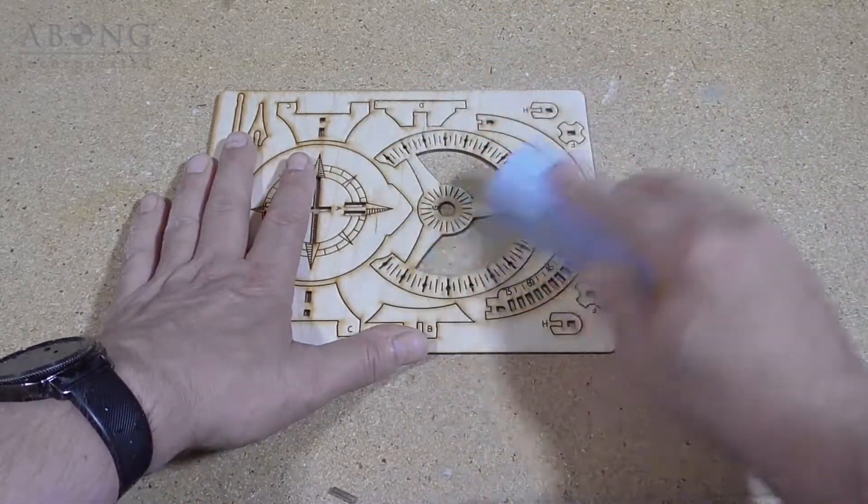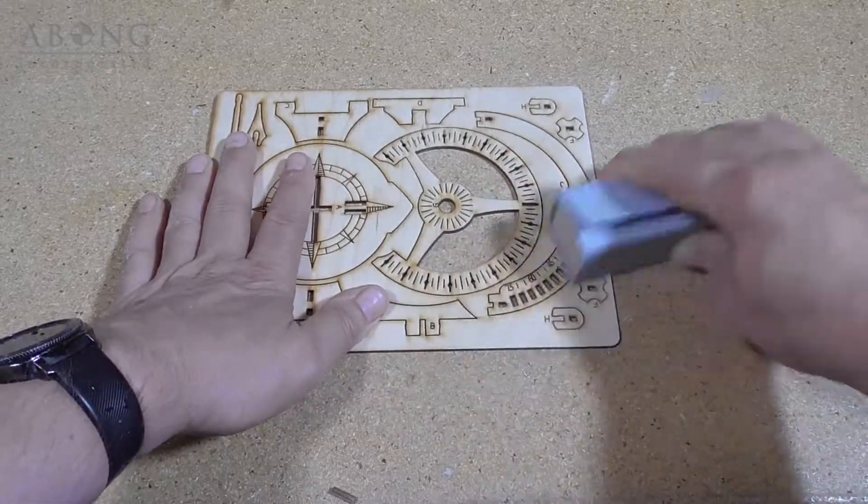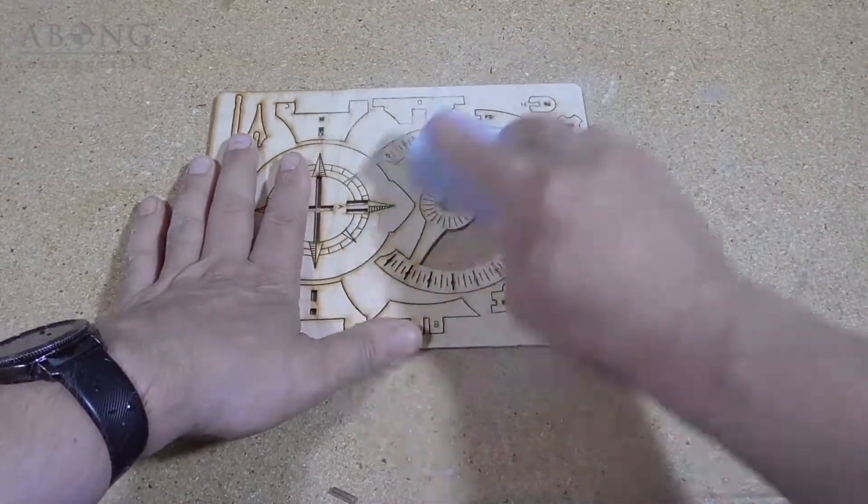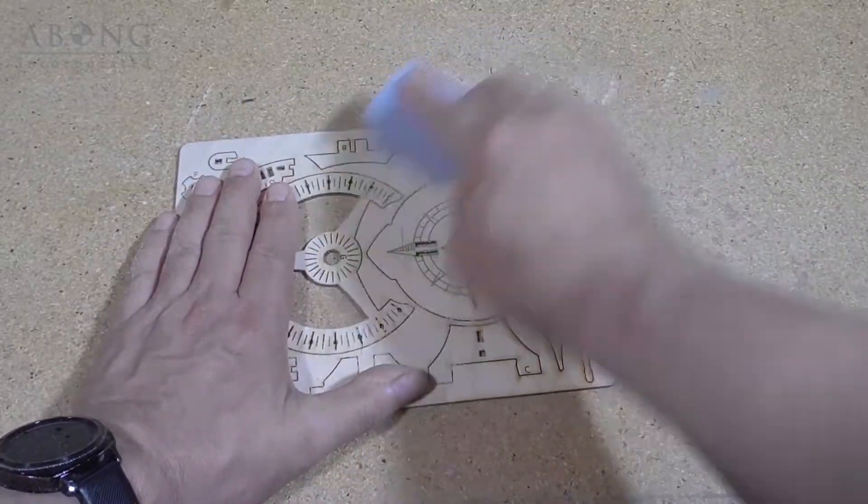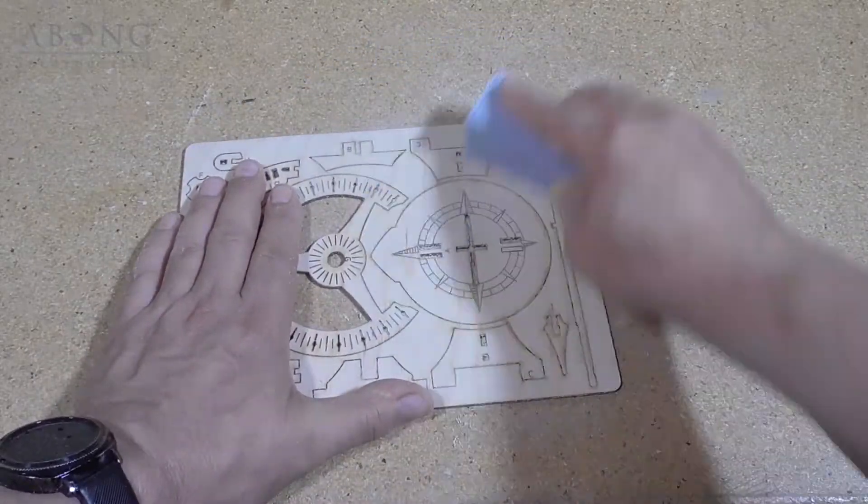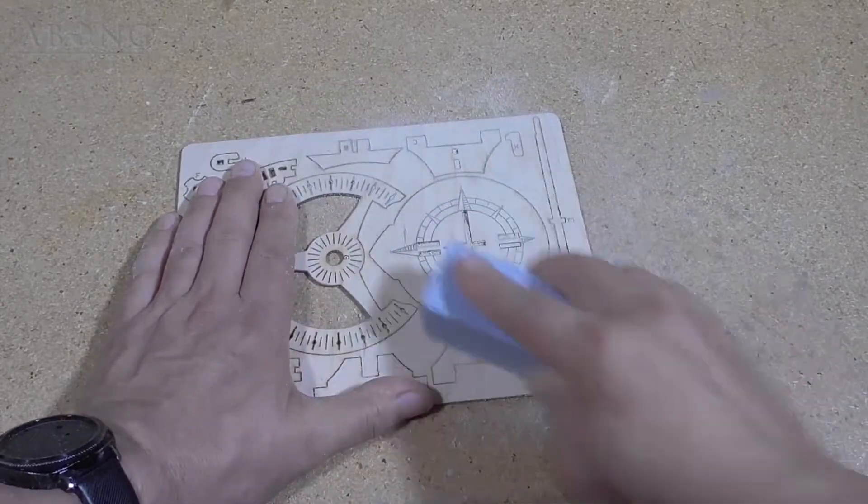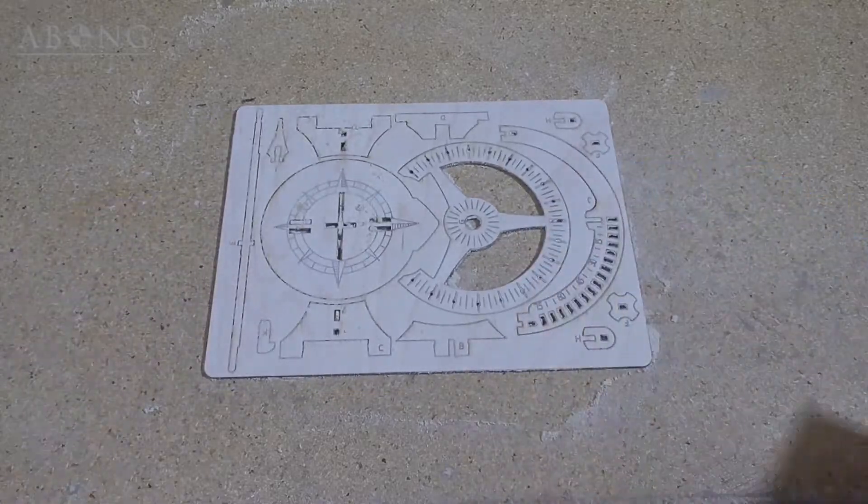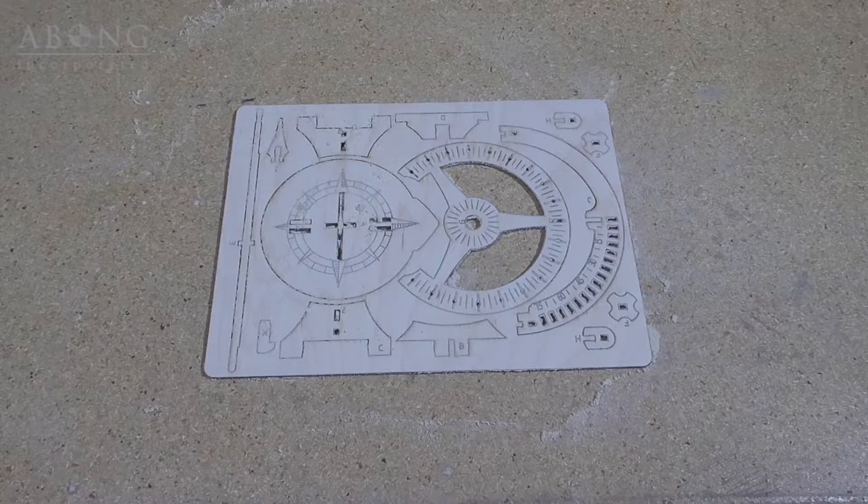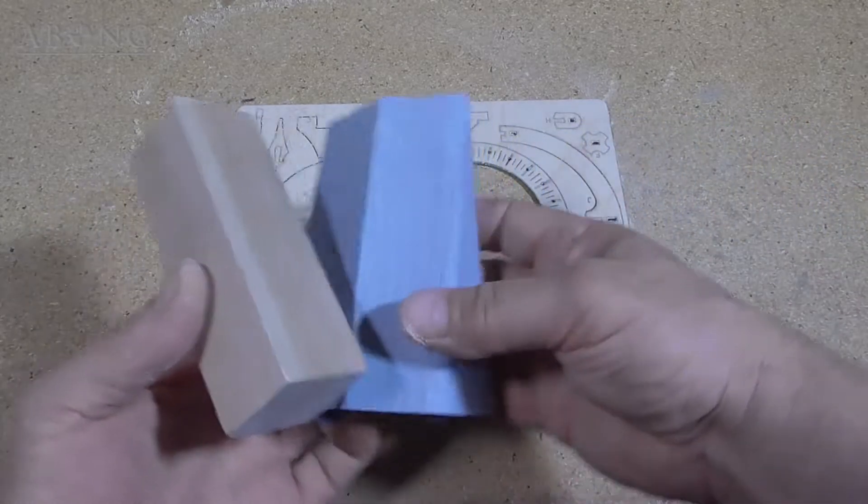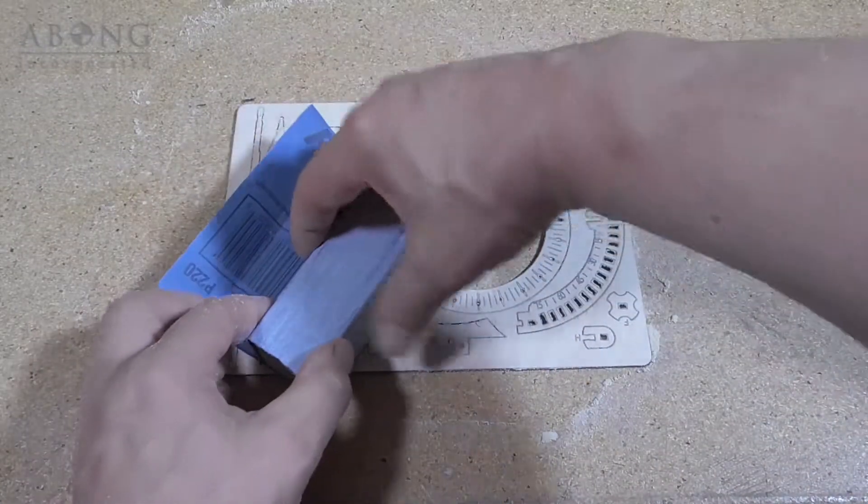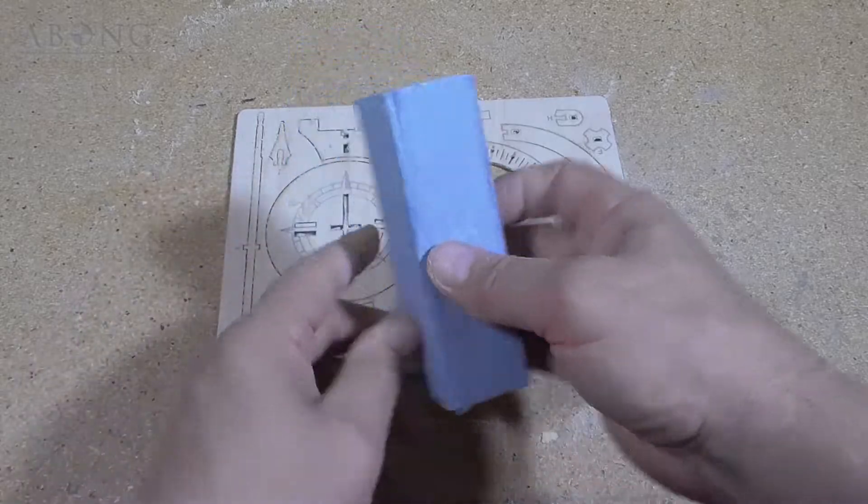So I'm just going to do a quick, light sanding. And we'll just go over that with finer sandpaper to create a smoother finish. This is 220 grit. I'm using a sanding block.